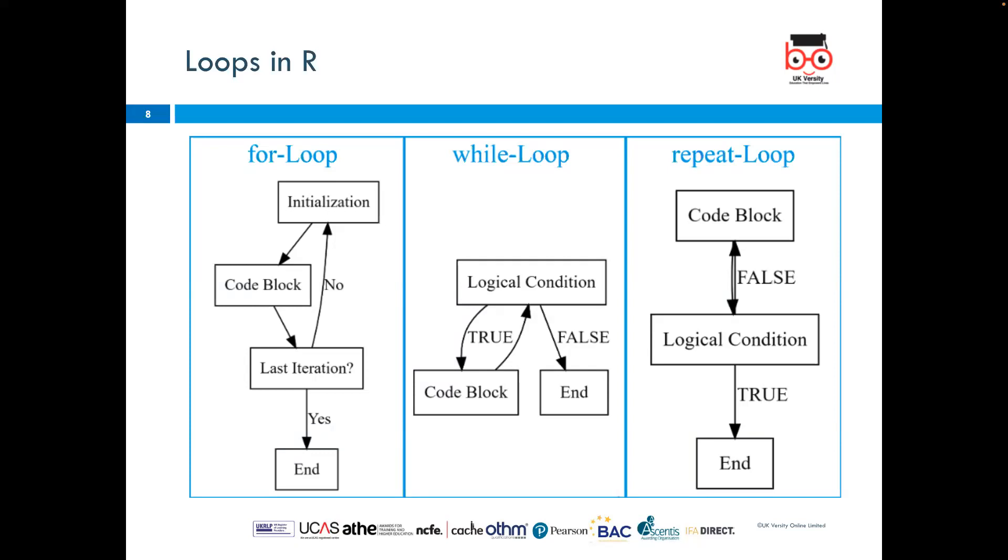The repeat loop is literally just repeating itself from the code block to the logical condition to the end. If false, it goes back to false, unless it is true, that's when it goes to the end.